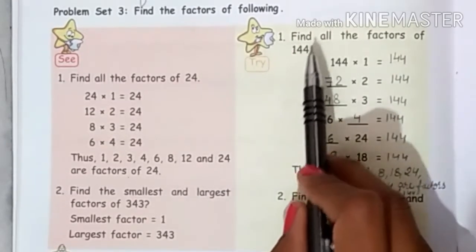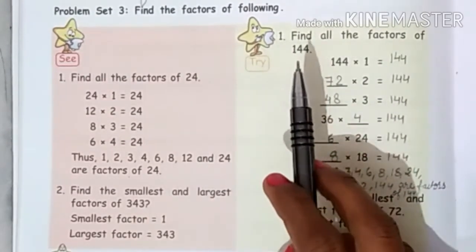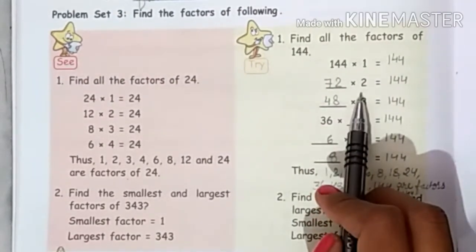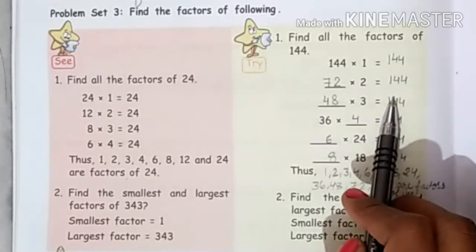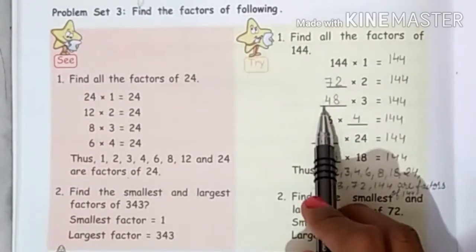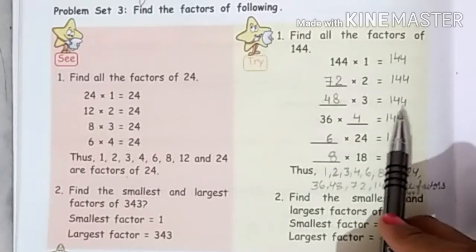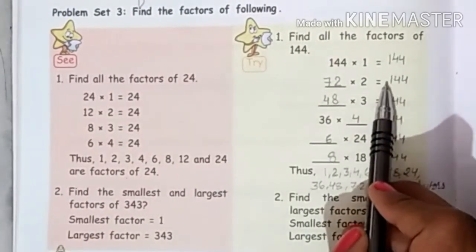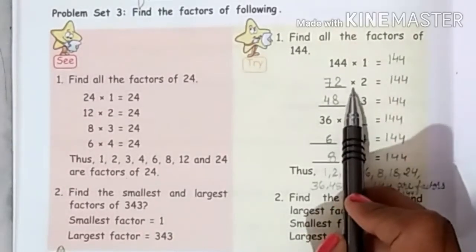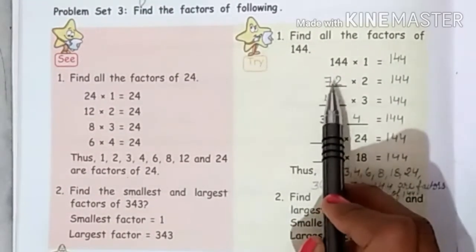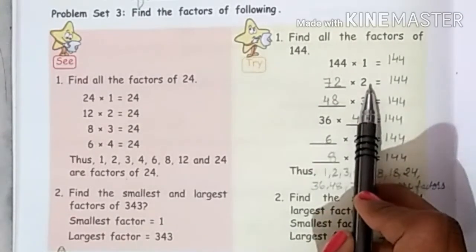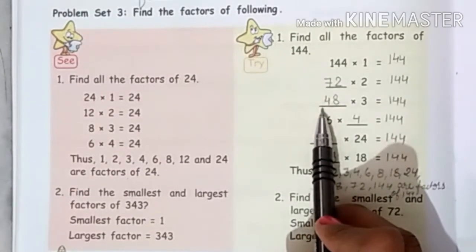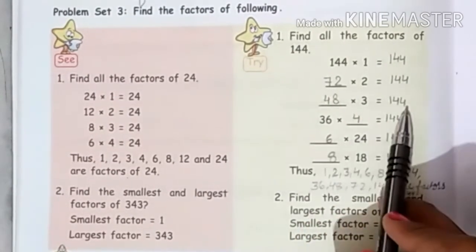So it is divisible by 2. If 72 multiply by 2, then 144 comes. If 48 multiply by 3, then 144 comes. So very easy way is that you divide this number, 144, by 2, so 72 comes. It means that 72 and 2 are both factors. 144 divided by 3 and the quotient is 48. It means that 48 and 3 are both factors.